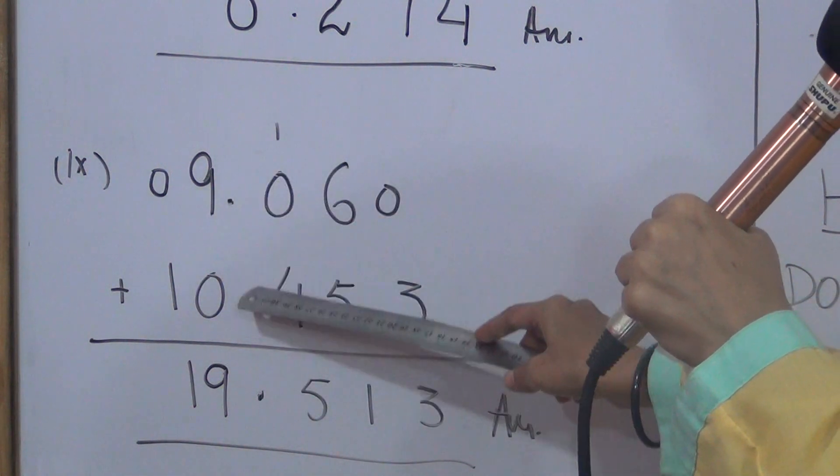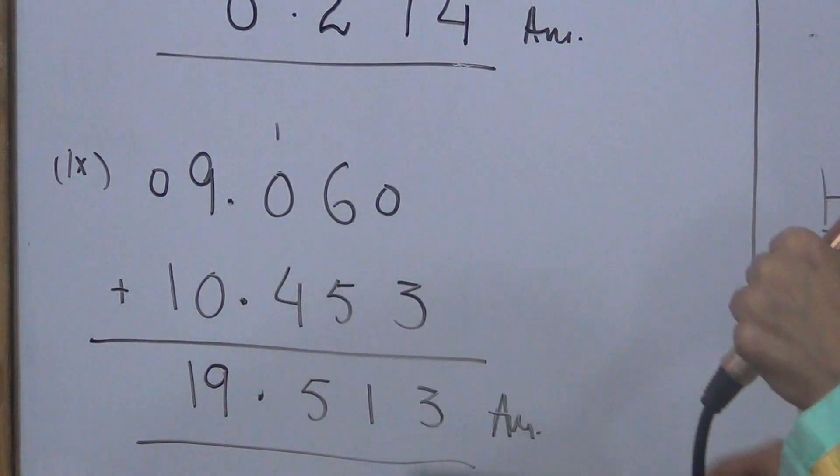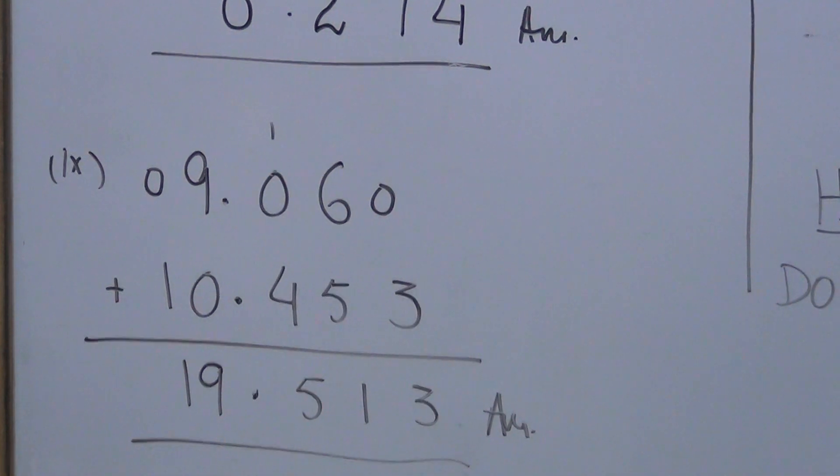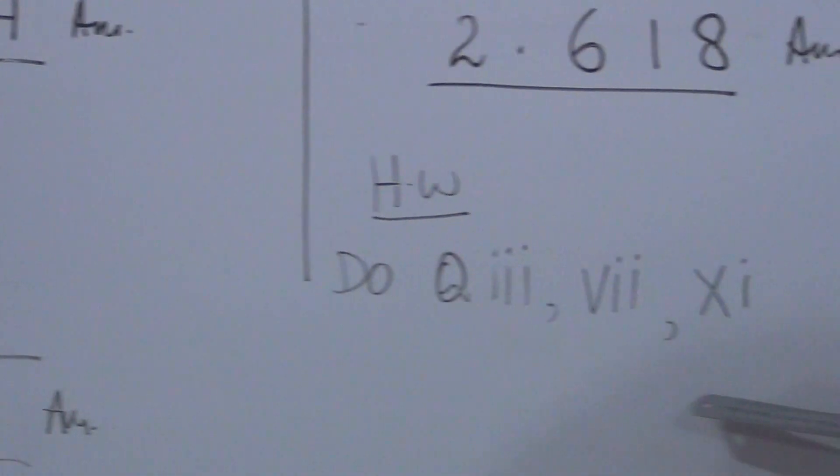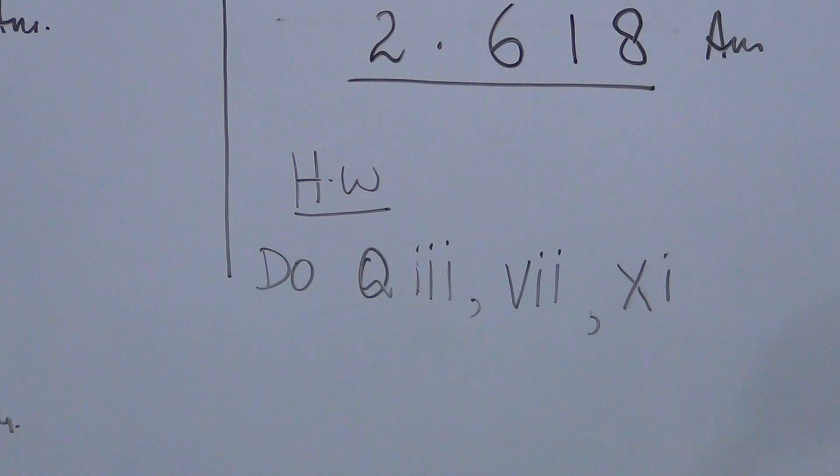Because we have to line up the decimal point. Where there is empty space, we put zero. Using this same method, you have to do question number three, seven, and eleven. This is your homework. You have to do these three questions in your copy. Thank you.